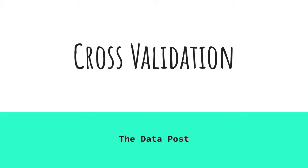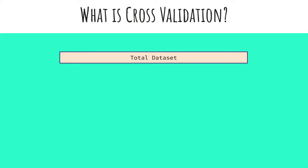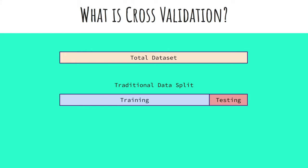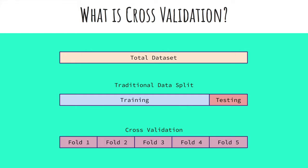Cross-validation is a commonly used technique where we can leverage all of our data and still generate a fair model evaluation. The first block represents our total data set — every observation we have is represented in this orange block. Now in a traditional data split, we have two sets: a training set and a testing set. With cross-validation, we split our data into partitions, known as folds.